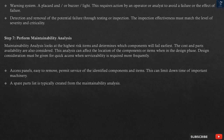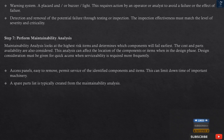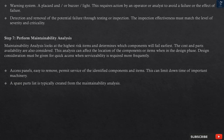Step 7: Perform maintainability analysis. Maintainability analysis looks at the highest risk items and determines which components will fail earliest. The cost and parts availability are also considered. This analysis can affect the location of the components or items when in the design phase. Design consideration must be given for quick access when serviceability is required more frequently. Access panels, easy to remove, permit service of the identified components and items. This can limit downtime of important machinery. A spare parts list is typically created from the maintainability analysis.